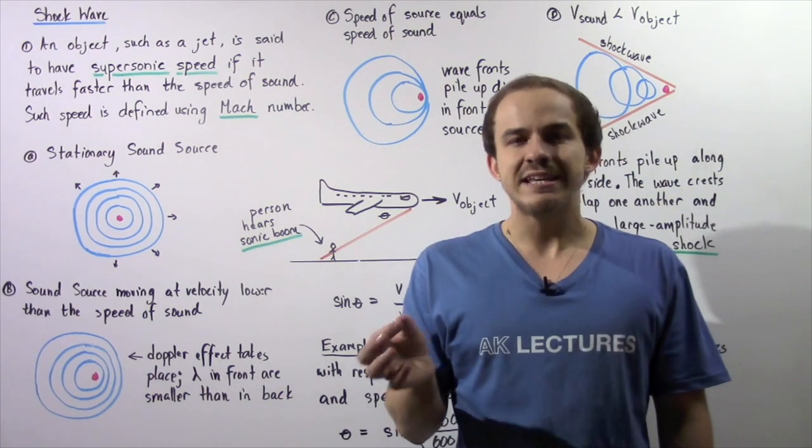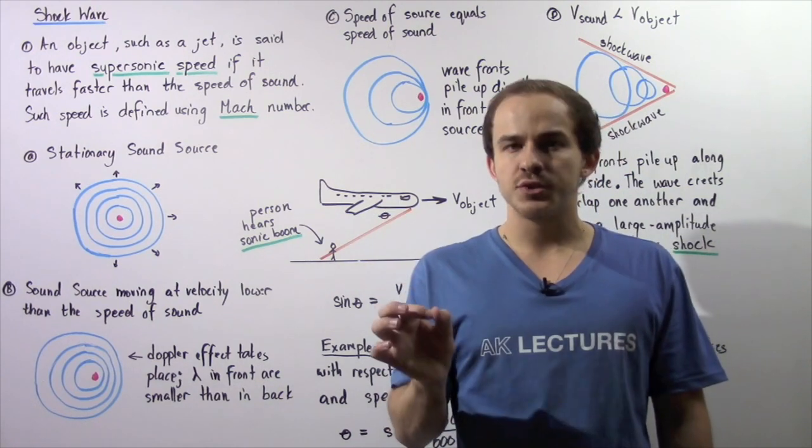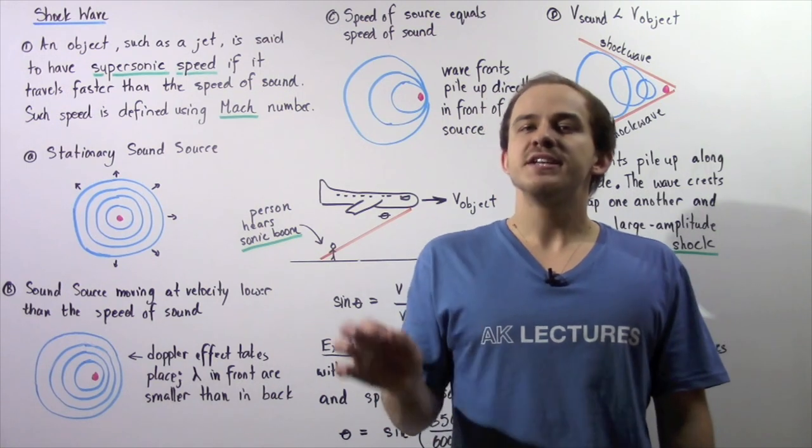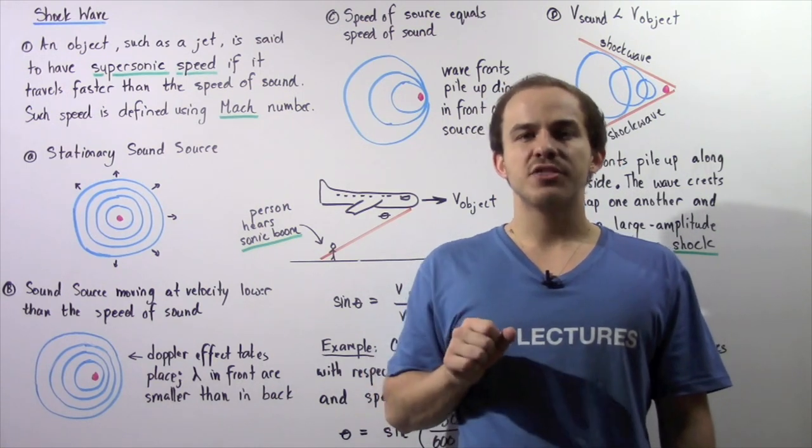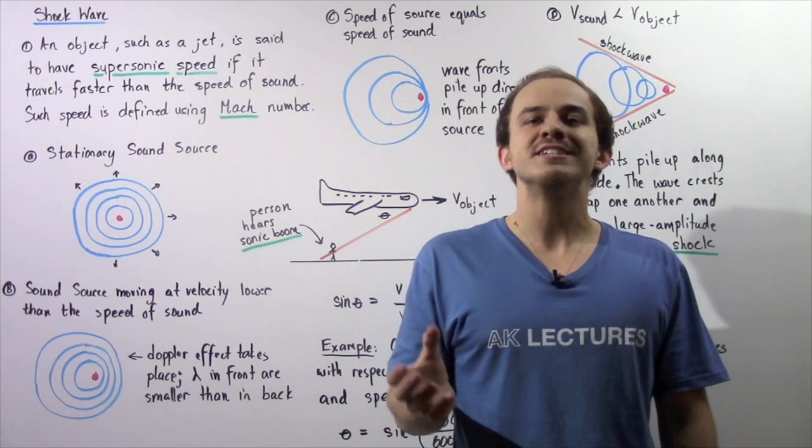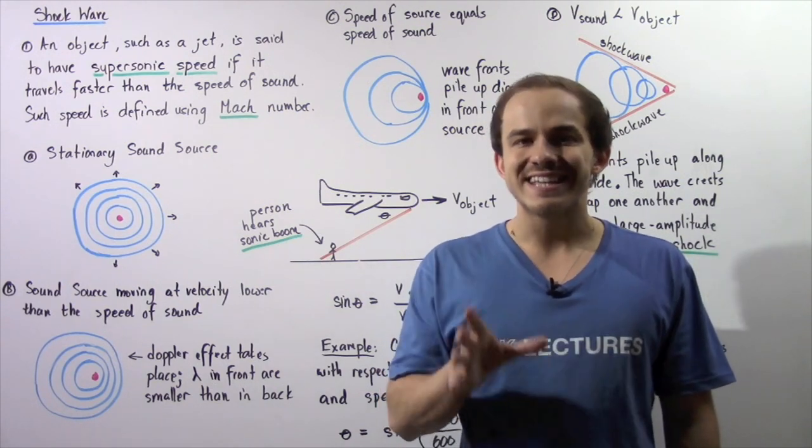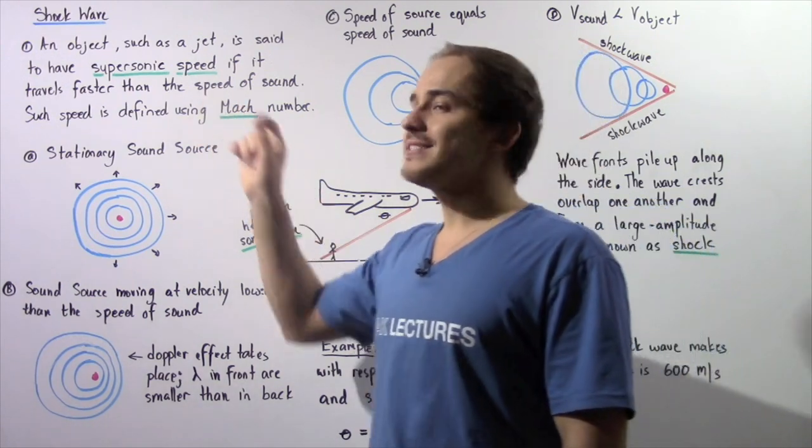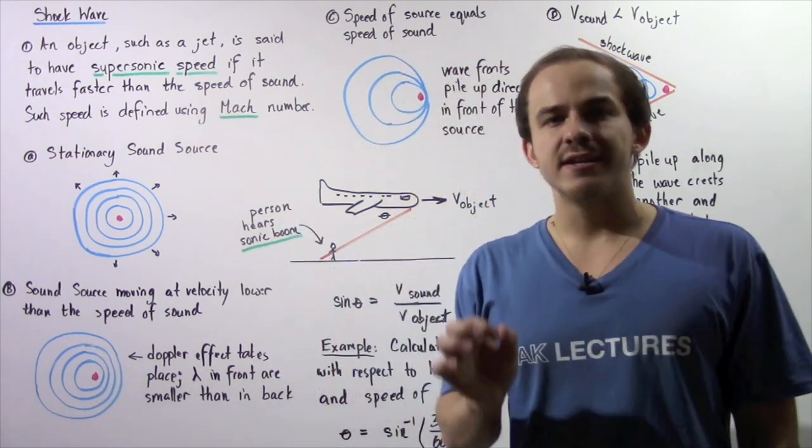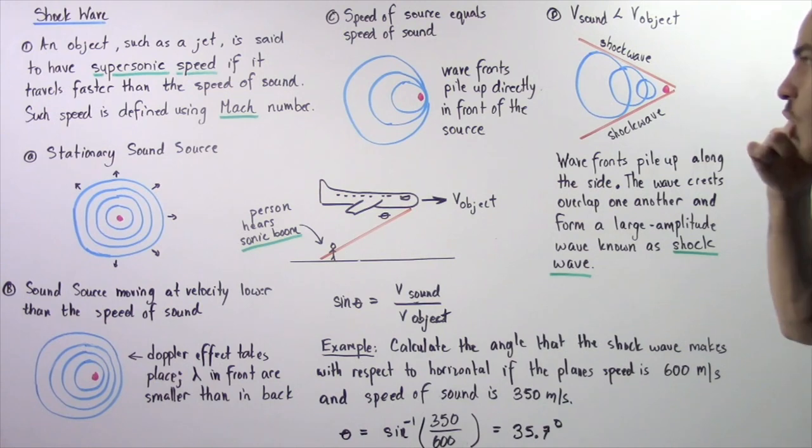The observer will perceive a change in frequency. Now what happens when the speed of the moving object creating the sound wave is greater than the velocity of the sound wave itself? Well, something known as a shock wave is created, as we'll see in just a moment.